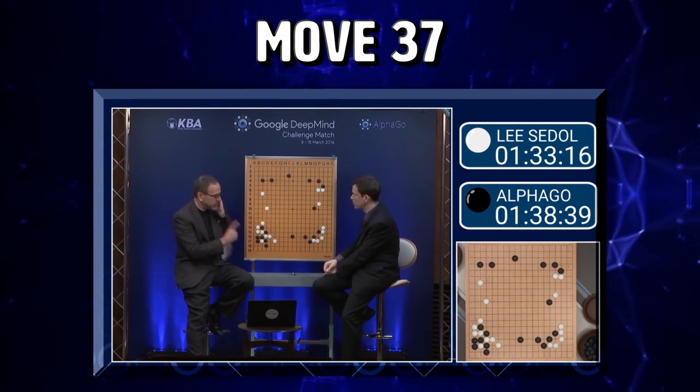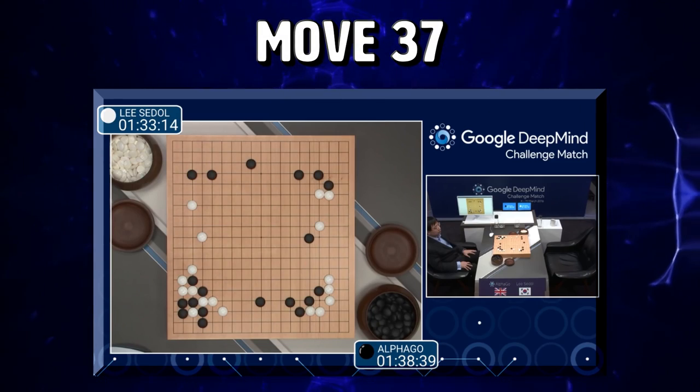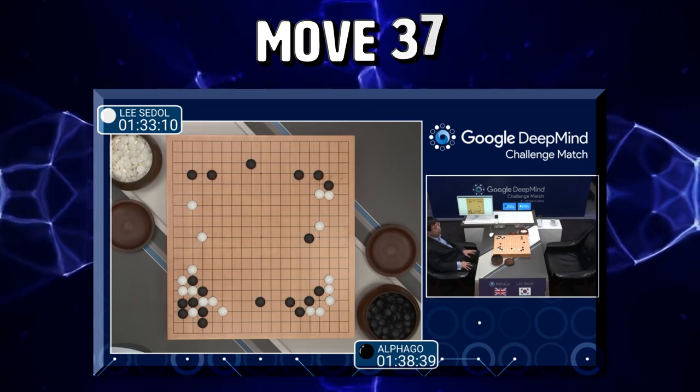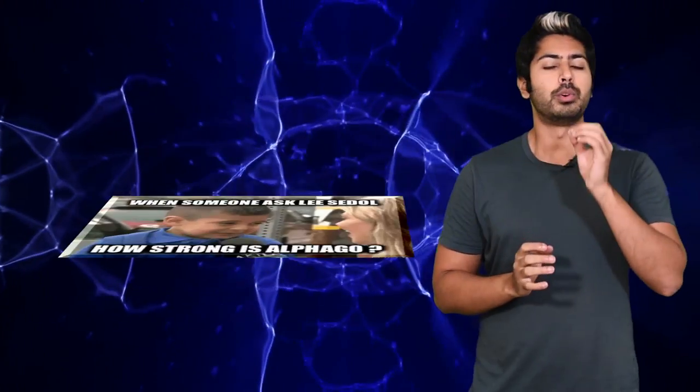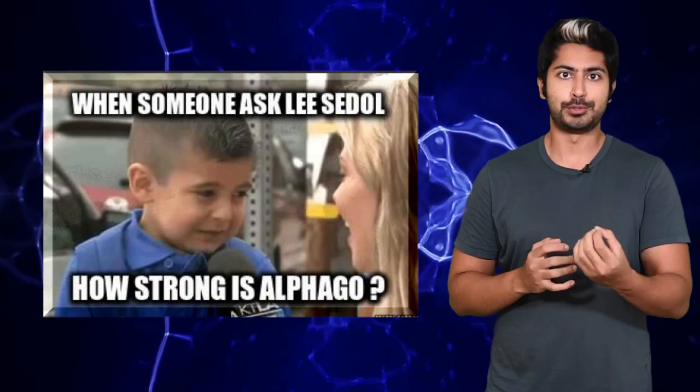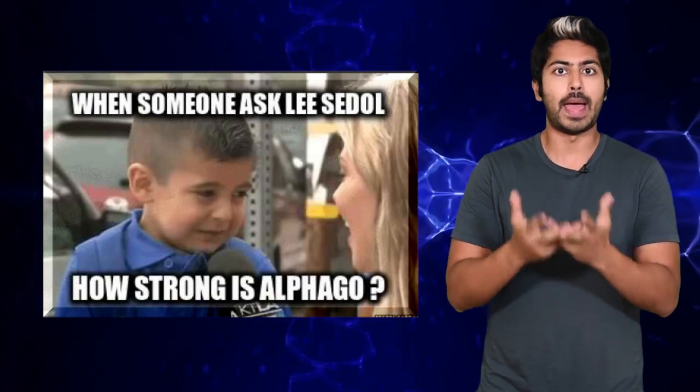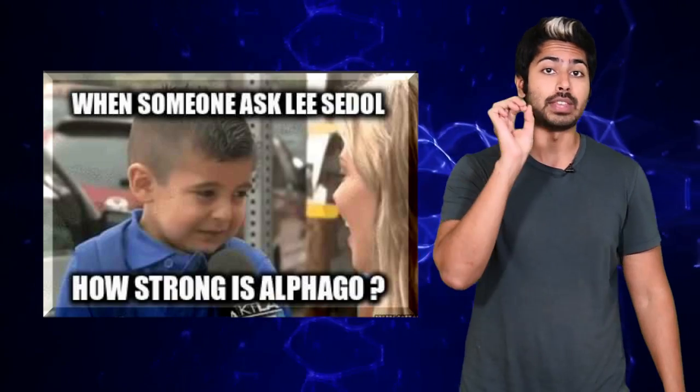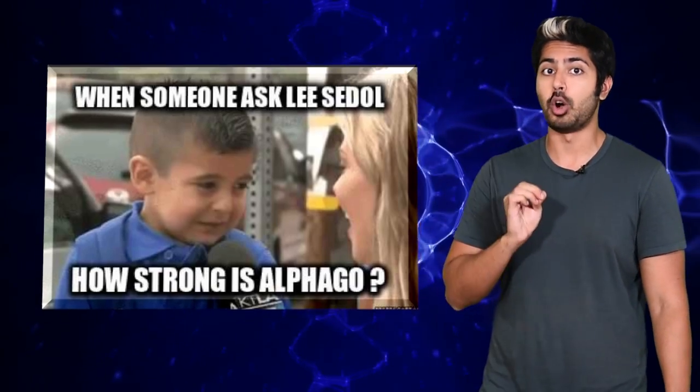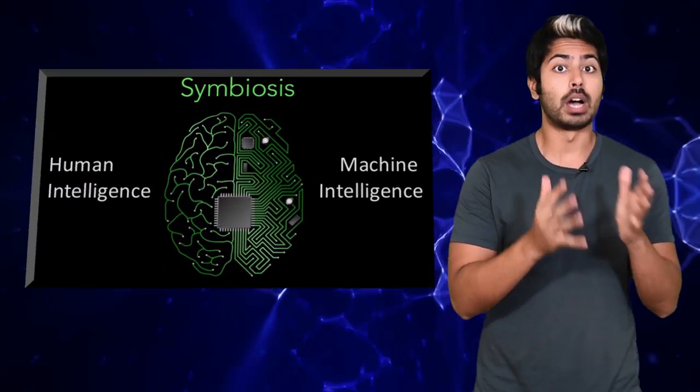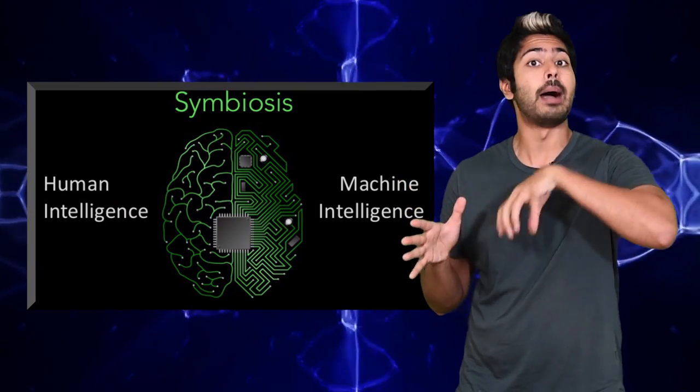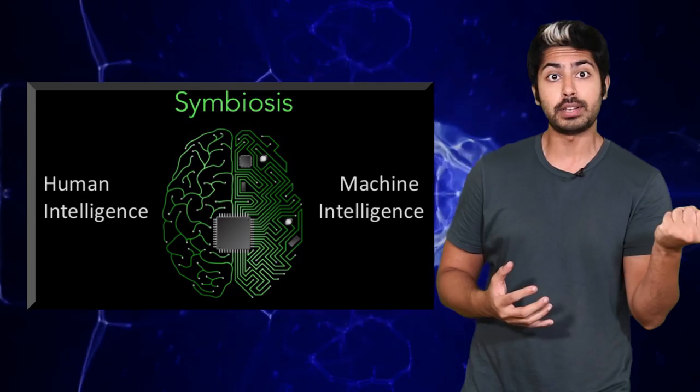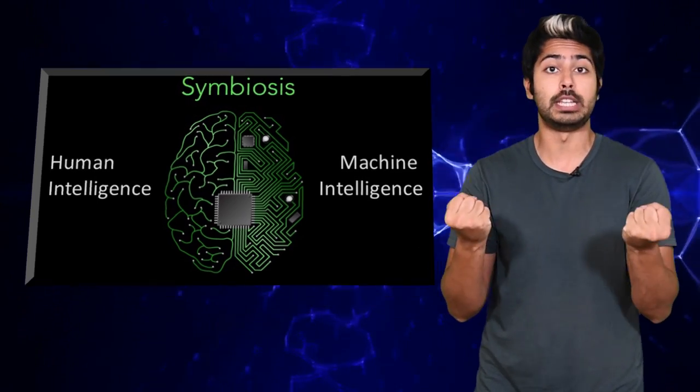AlphaGo played this move, which I want to hear more about in a second, but Lee has left the room. He left the room after that move. It was a move that seemed terrible to everyone who saw it, but it turned out that Move 37 was an incredible move to play and it was instrumental in helping AlphaGo win the game. Somehow, a computer program knew something about the game that we didn't. Somehow, its intuition was both different and better than human intuition.